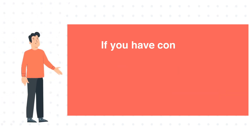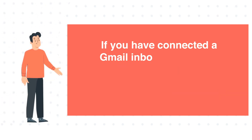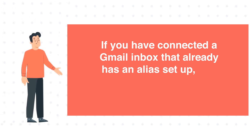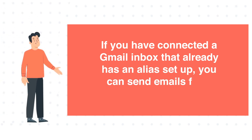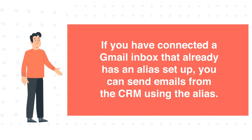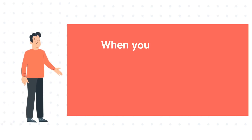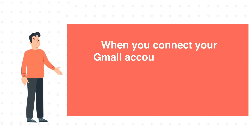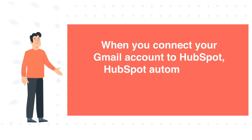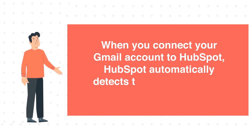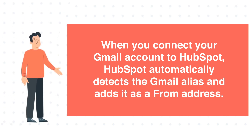If you have connected a Gmail inbox that already has an alias set up, you can send emails from the CRM using the alias. When you connect your Gmail account to HubSpot, HubSpot automatically detects the Gmail alias and adds it as a from address.